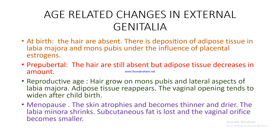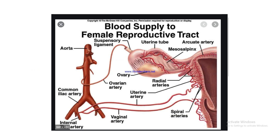Age-related changes in the external genitalia: at birth, hair are absent but there is adipose tissue deposition in the labia majora and mons pubis under the influence of placental estrogens. Pre-pubertally, hair are still absent and adipose tissue decreases. At reproductive age, hair grow on the mons pubis and lateral labia majora, adipose tissue reappears, and the vaginal opening tends to widen after childbirth. After menopause, the skin atrophies, becomes thinner and drier, the labia minora shrink, subcutaneous fat is lost, and the vaginal orifice becomes smaller.